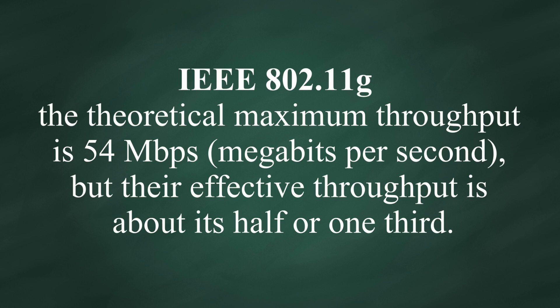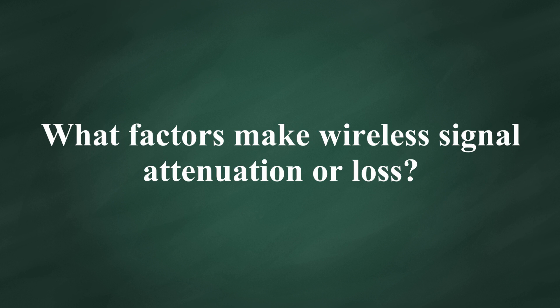Taking IEEE 802.11g as an example, the theoretical maximum throughput is 54 Mbps, but their effective throughput is about half or one-third. What factors make wireless signal attenuation or loss?